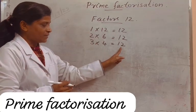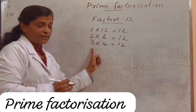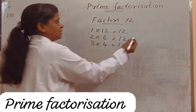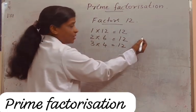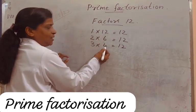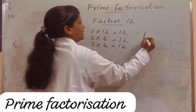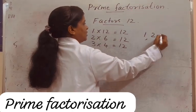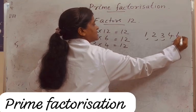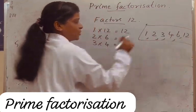Is 12 divisible by 5? No. So which are the factors of 12? 1, 2, 3, 4, 6, and 12. These are the factors of 12.